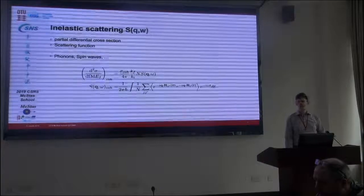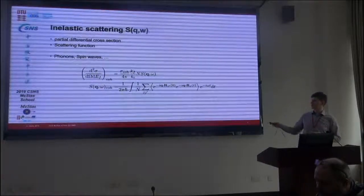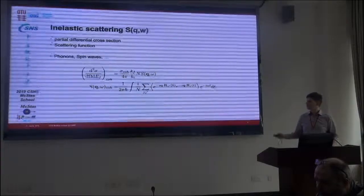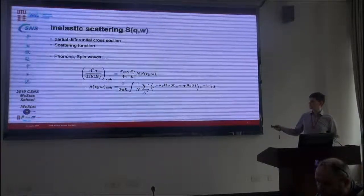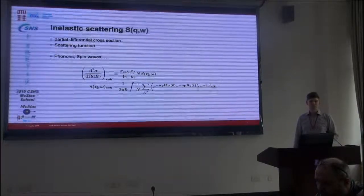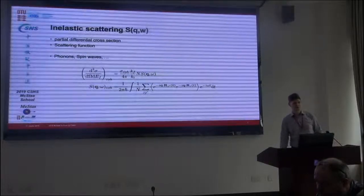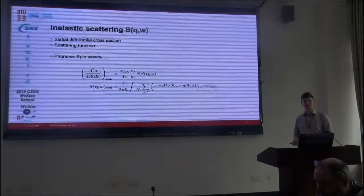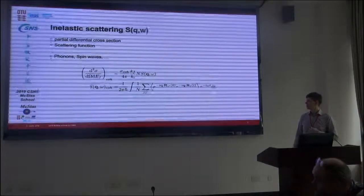So, first of all, inelastic scattering is connected to the partial differential cross-section of the neutron through this S Q and omega. It's sometimes called the scattering function, and has some value for every Q-vector and energy transfer omega.